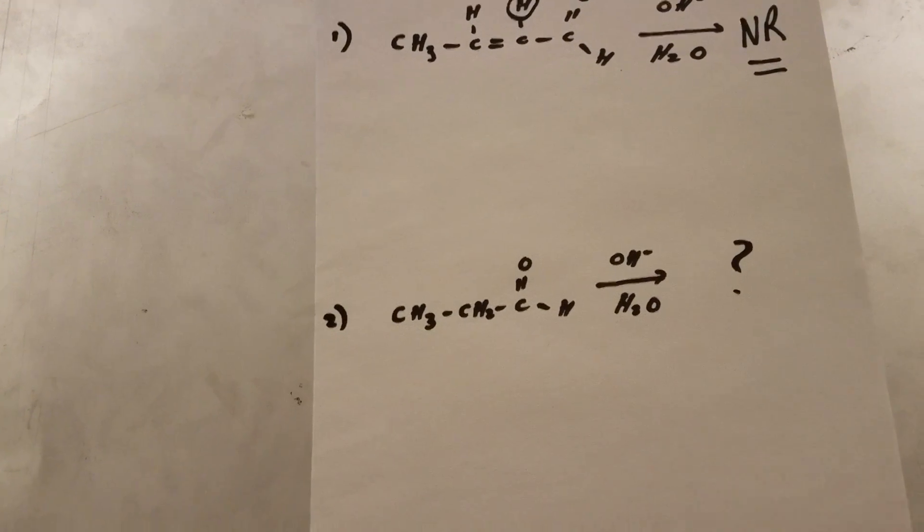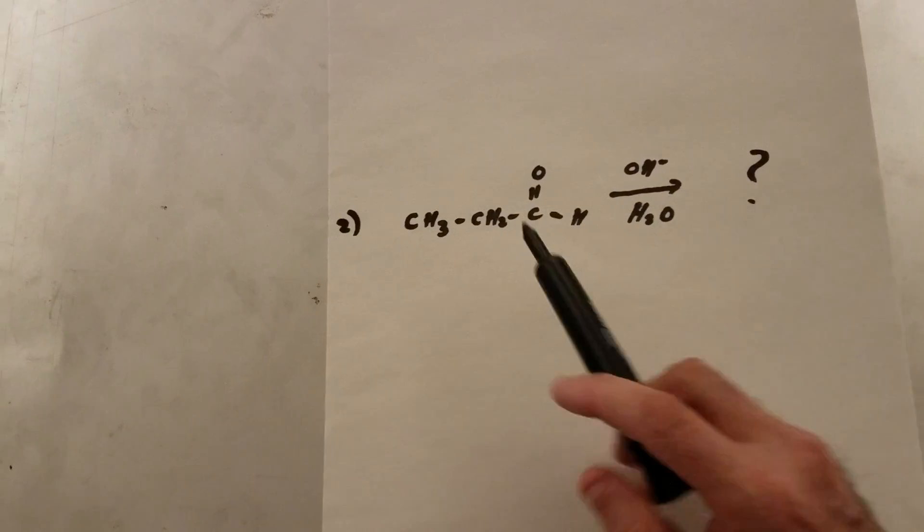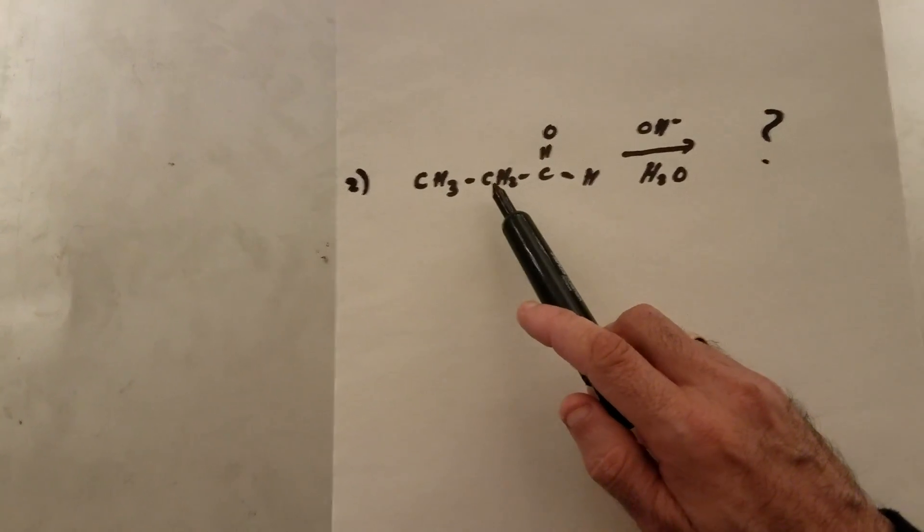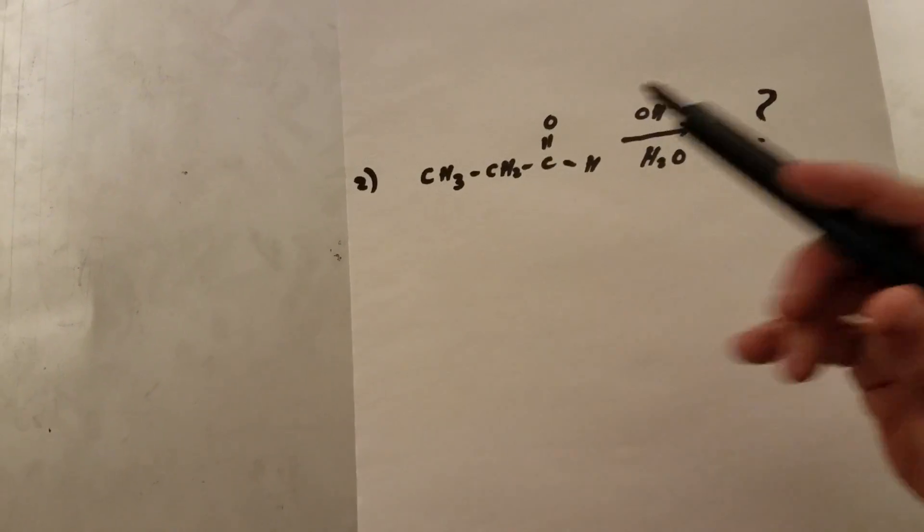Let's look at number two. Well, here you have an aldehyde again. You got the same conditions. And this time you do have an alpha carbon and that alpha carbon has two protons, which are the alpha protons, which means they could come off.